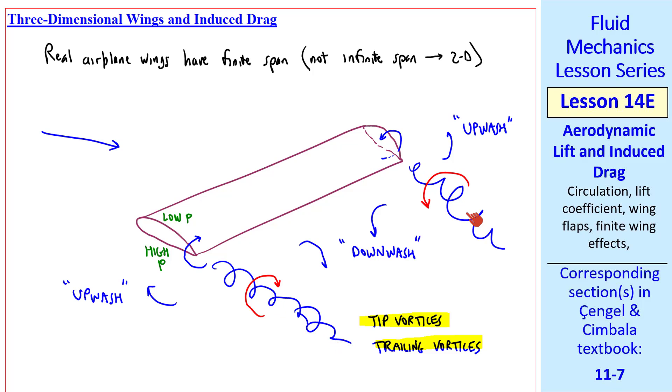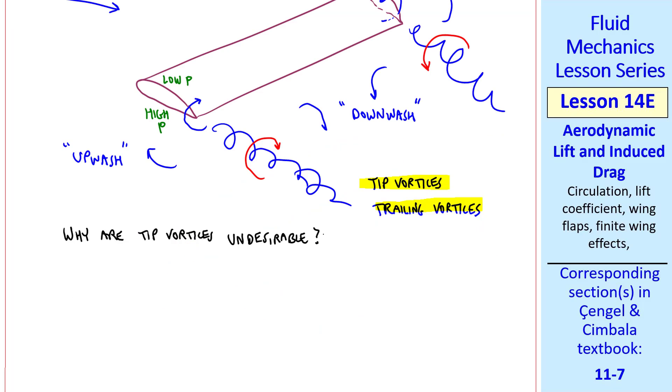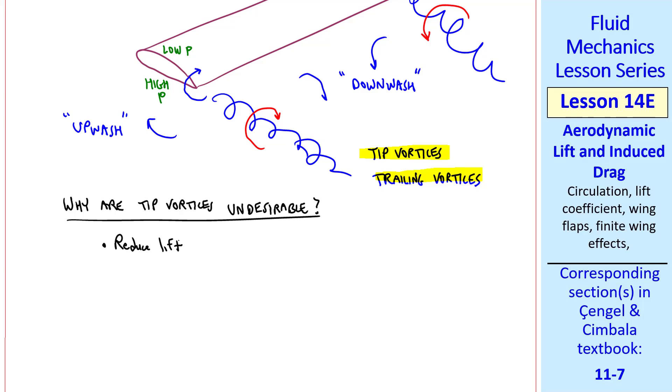Why are tip vortices undesirable? While they reduce lift somewhat, this disrupted flow causes the wing not to produce much lift near the tips. It also increases drag. The technical name is induced drag, which is the drag induced by the tip vortices in the wing lift.